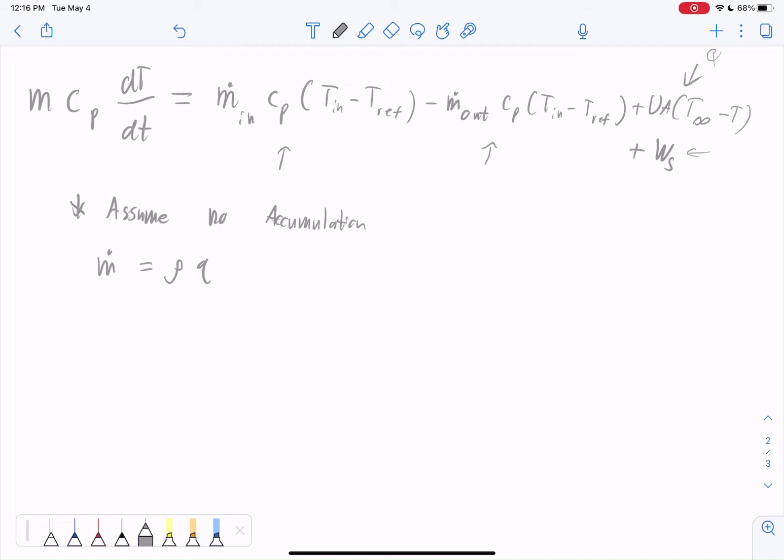And what that should give us is rho V instead of, here I'll write that out too, M should equal rho times V. So rho V Cp dT/dt is equal to rho Q Cp (T1 minus T2).